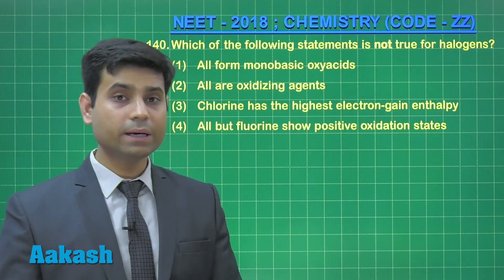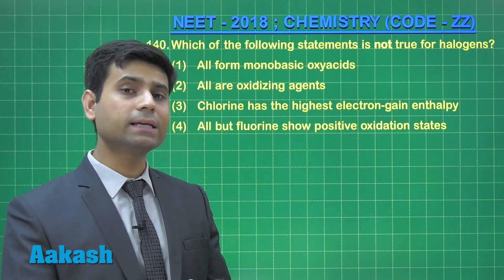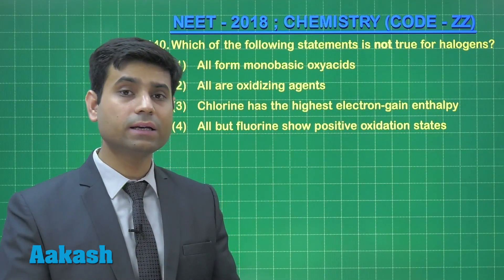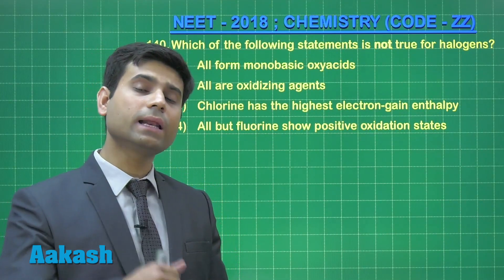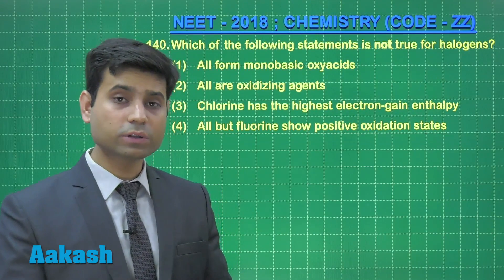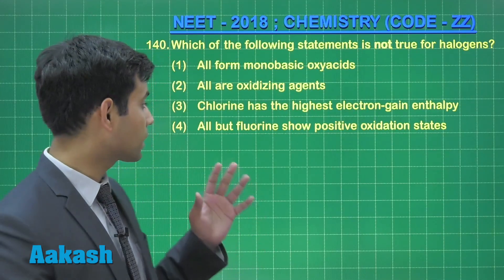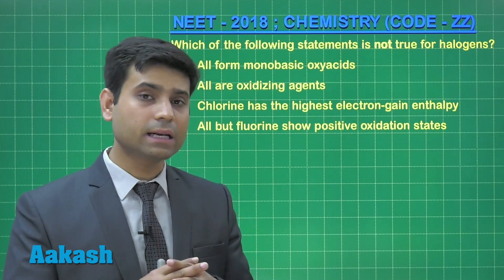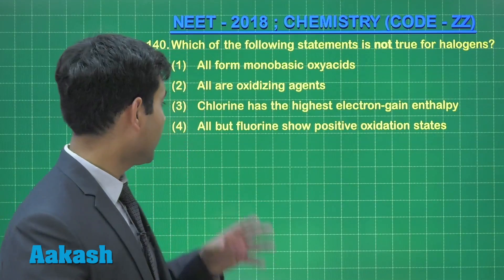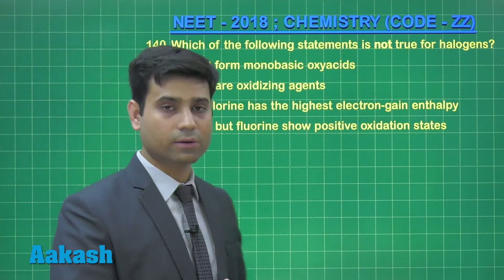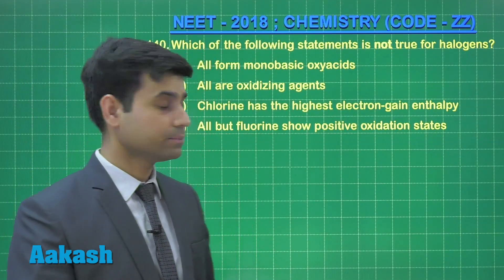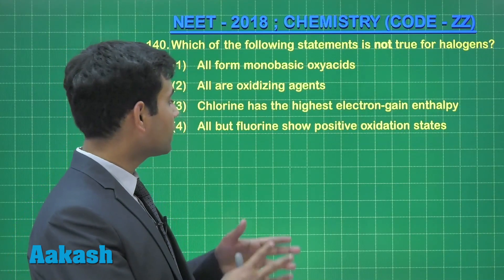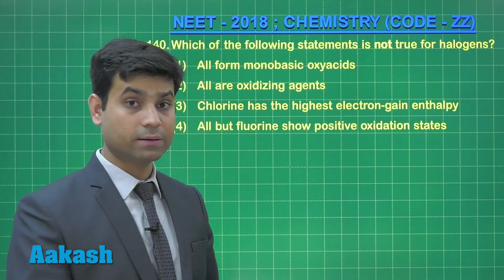Option 3 states that chlorine has the highest electron gain enthalpy. This is a correct statement because fluorine has a small size, so inter-electronic repulsion is present. The incoming electron is repelled, which decreases fluorine's electron gain enthalpy slightly, and hence chlorine has the highest electron gain enthalpy.